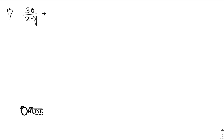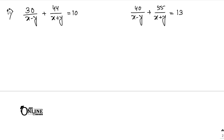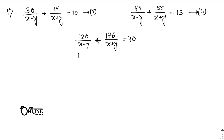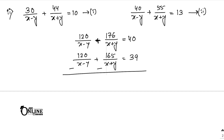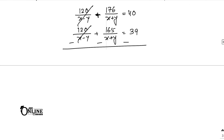Problem 3.2: 30/(x minus y) plus 44/(x plus y) equals 10, and 40/(x minus y) plus 55/(x plus y) equals 13. Multiply the first equation by 4 and the second by 3: this gives 120/(x minus y) plus 176/(x plus y) equals 40, and 120/(x minus y) plus 165/(x plus y) equals 39. Subtracting eliminates the first term, leaving 11/(x plus y) equals 1, so x plus y equals 11.